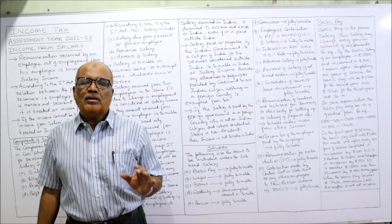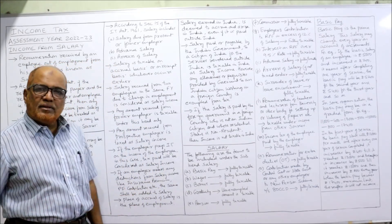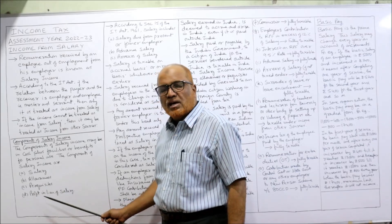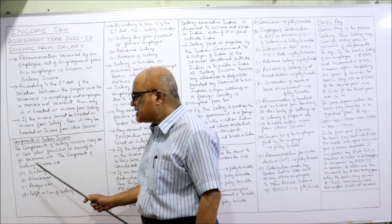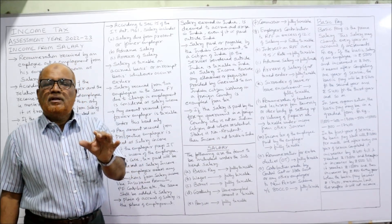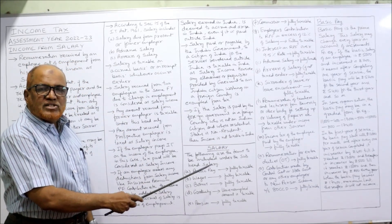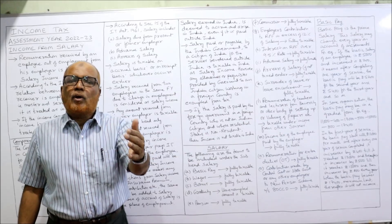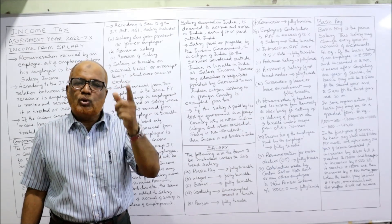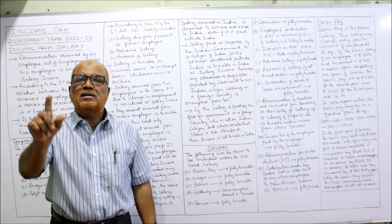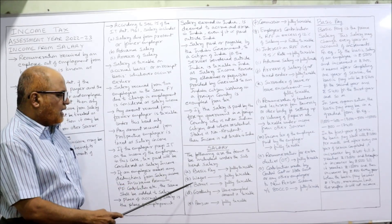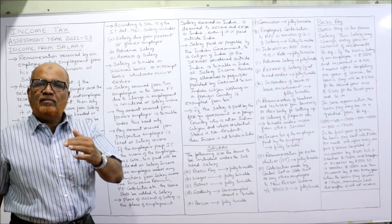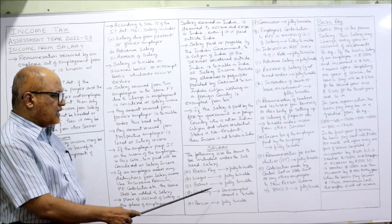These are the points to remember regarding salary. Now, subhead salary — the first subhead. What items come under the head salary? First: basic pay, which is fully taxable. When you see basic pay in a problem, immediately know it is fully taxable under the subhead salary. Then wages — basic pay or wages — fully taxable. Bonus given by the employer to the employee is also fully taxable under the subhead salary.